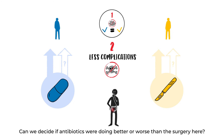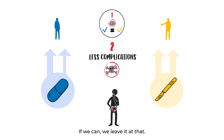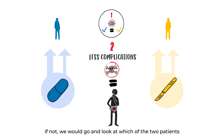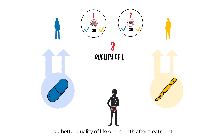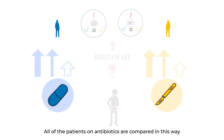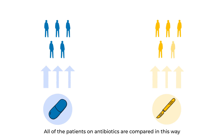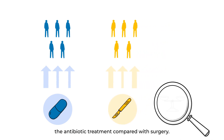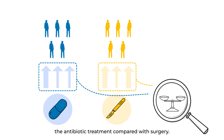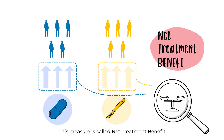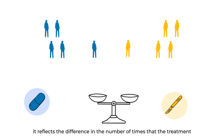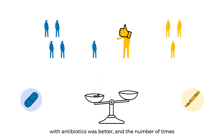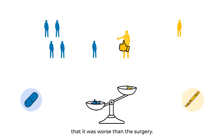Then we look at the next outcome on our priority list and compare its value. Can we decide if antibiotics were doing better or worse than surgery here? If we can, we leave it at that. If not, we look at which of the two patients had better quality of life one month after treatment. All patients on antibiotics are compared in this way with every patient from the surgery group. We can now measure the effect of the antibiotic treatment compared with surgery — this measure is called Net Treatment Benefit.